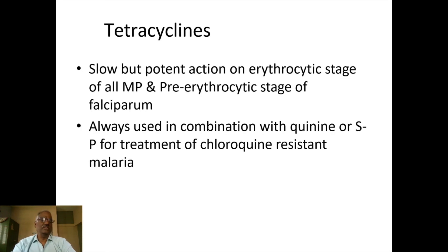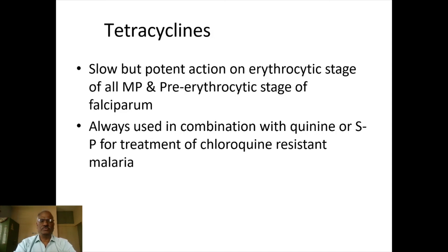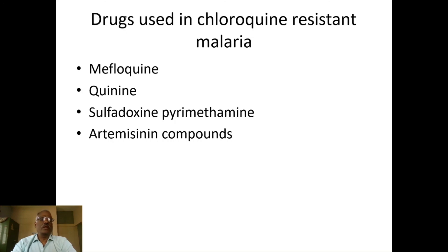Tetracycline and its naphthalene derivatives can also be used for the treatment of malaria. It mainly acts on the erythrocytic stage of malaria and is used in chloroquine-resistant malaria. In such cases, mefloquine, quinine, sulfadoxine-pyrimethamine combination, or artemisinin components can be used as the drug of choice in chloroquine-resistant malaria.